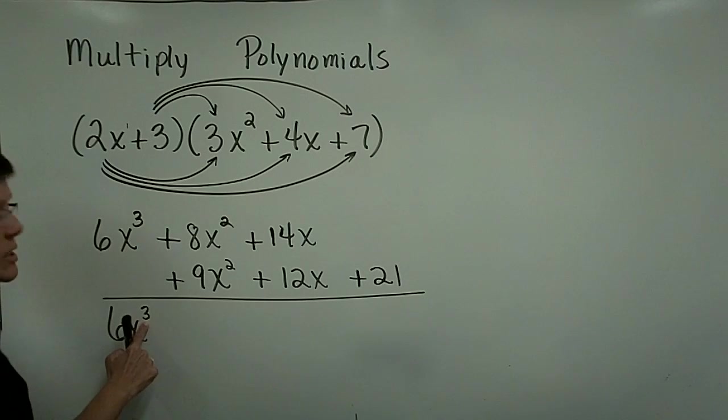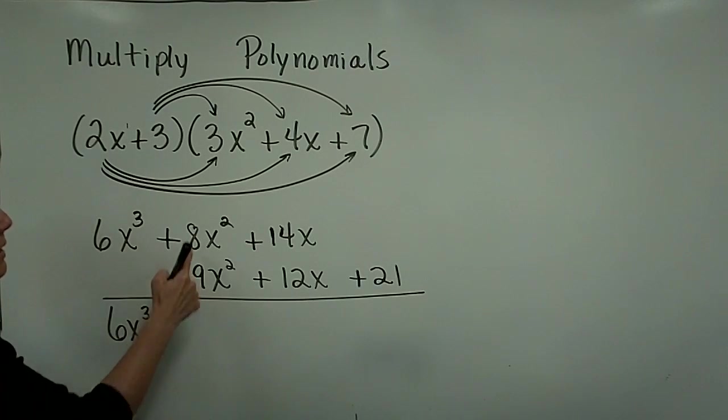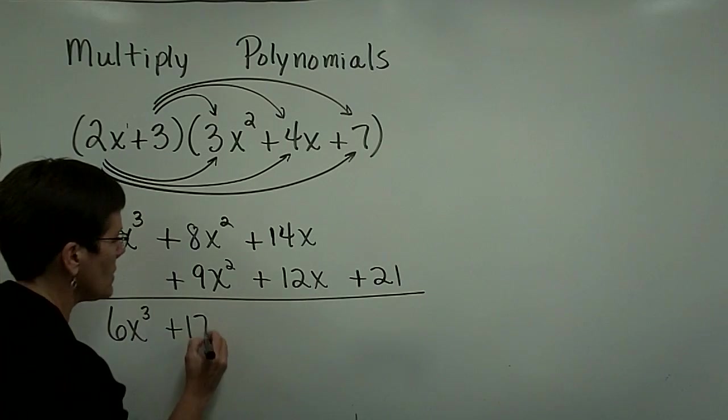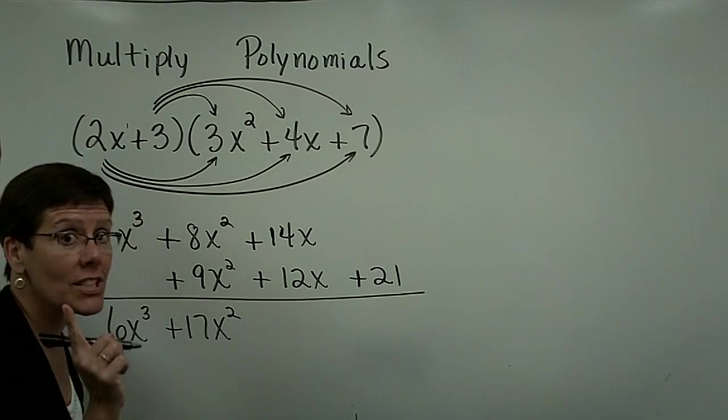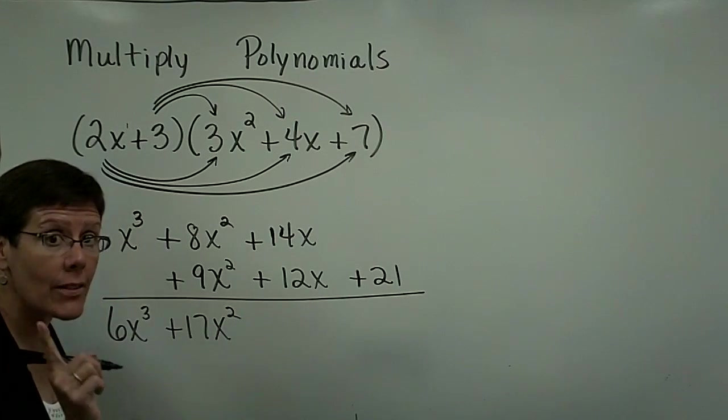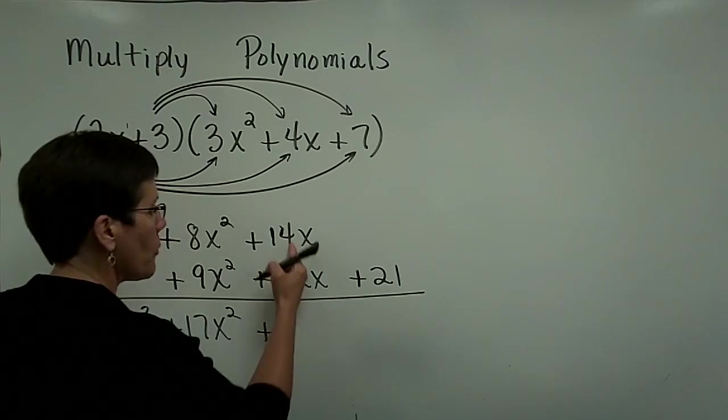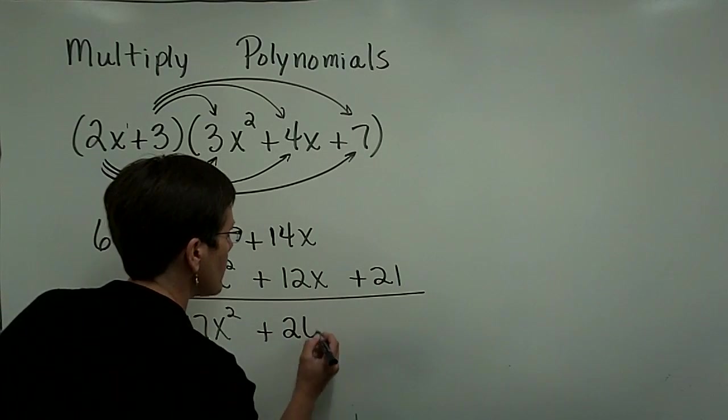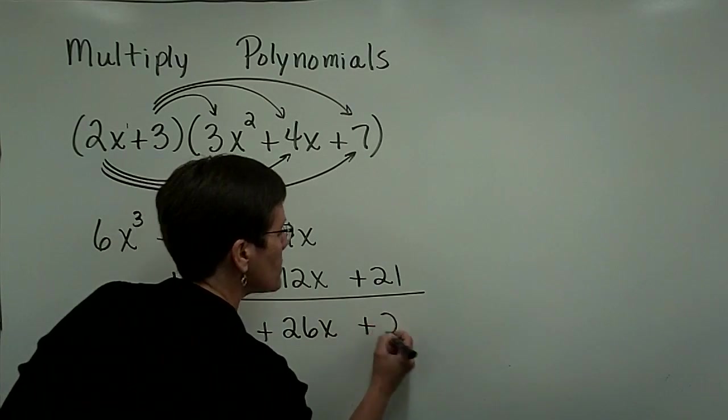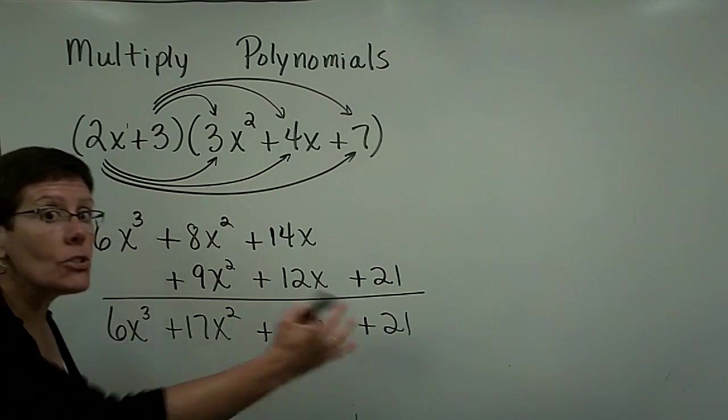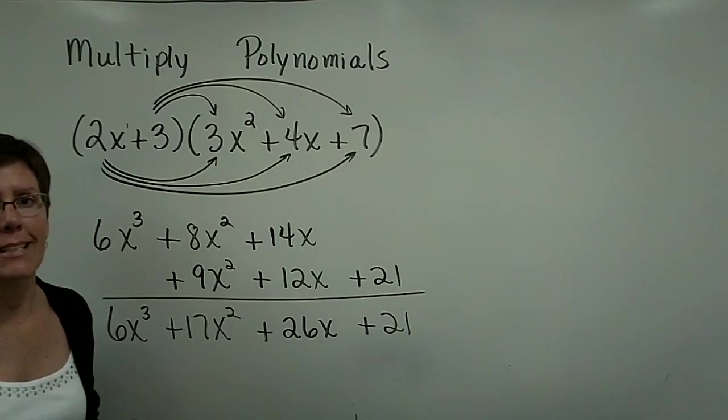in descending order of the exponent, I have 6x cubed. The 8 and 9 adds to be 17x squared. You're just adding those terms now. So you add their coefficients and leave the variable portion alone. 14 and 12 add to be 26x plus the 21. And you don't do anything with that. Don't try to be collecting anything.